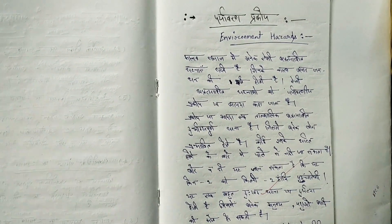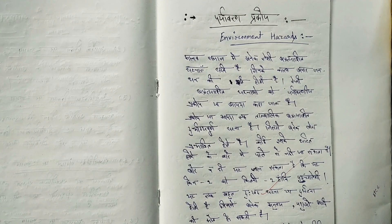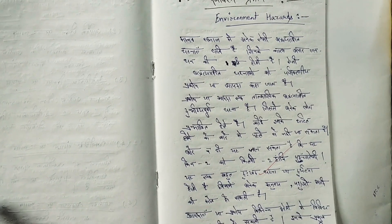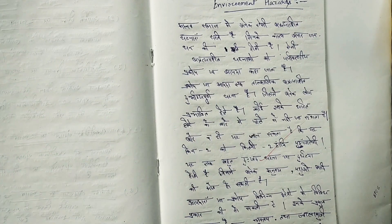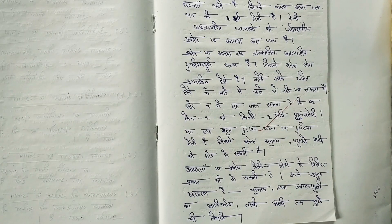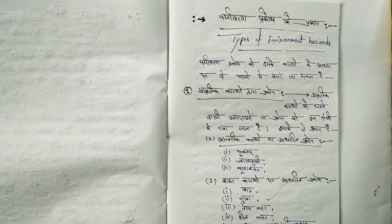Next is paryavaran prakop — environmental hazards. In human society, many unexpected events occur causing great loss of life. Such unexpected events are called paryavaran prakop or aapda. A prakop is an immediate, unexpected unfortunate event affecting many people; no one can know in advance when it will occur, whom it will affect, or how much damage it will cause. Examples include bhoukamp (earthquake), jwalamukhi (volcano), aur lambi avadhi ka sukha (prolonged drought).